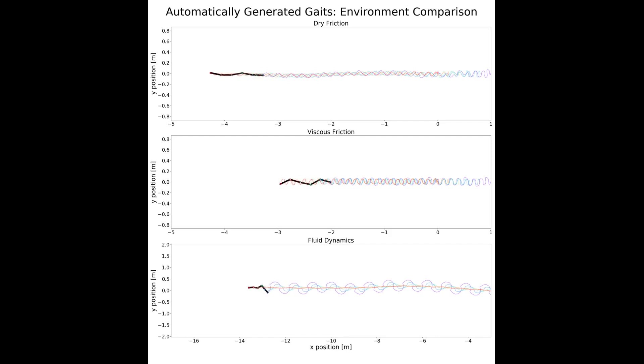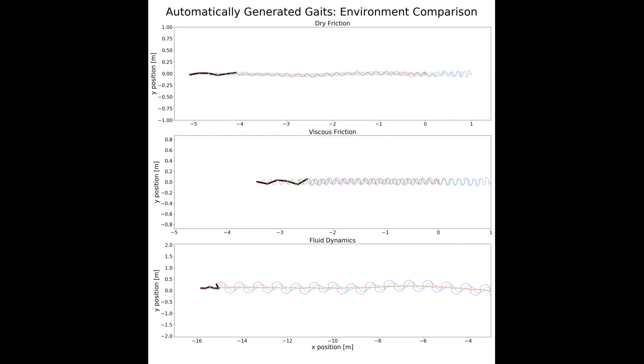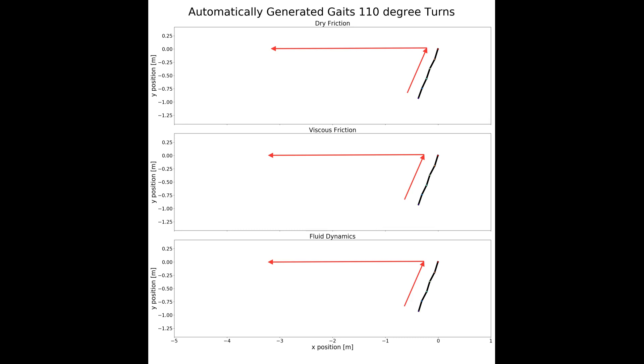Favoring the use of the tail qualitatively mirrors naturally observed gaits. Here we show a sharp turning gait. The red arrows highlight a 110 degree turn. These are the resulting gaits in all three environments.